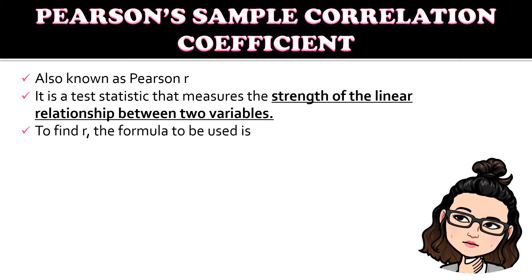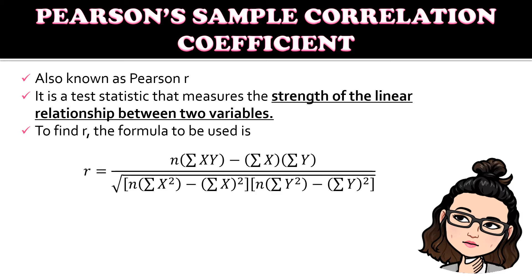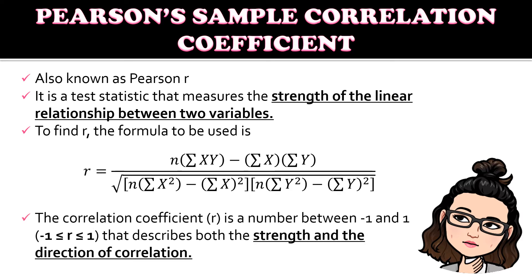To find R, this is the formula to be used. The correlation coefficient R is a number between negative 1 and 1 — R is greater than or equal to negative 1 but less than or equal to 1. It describes both the strength and the direction of the correlation.